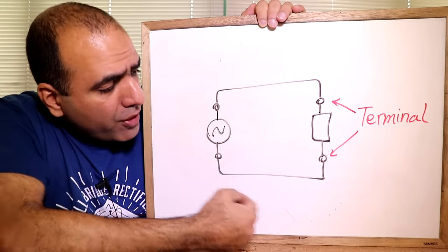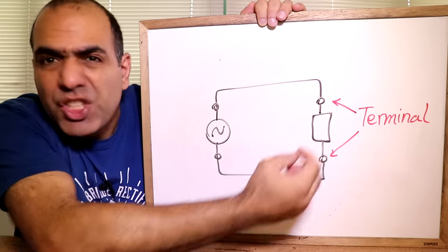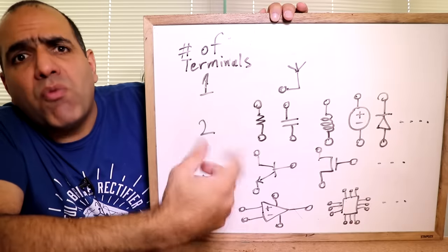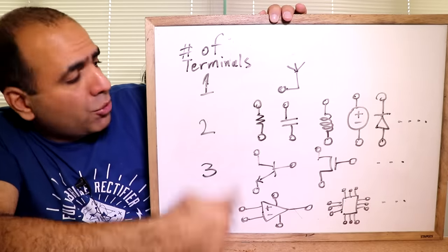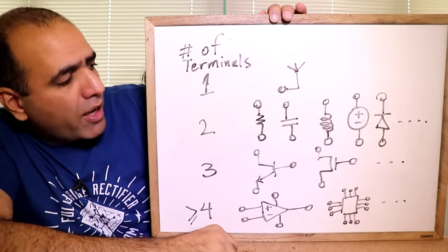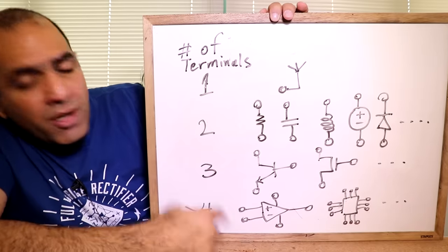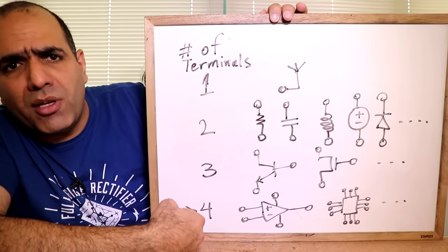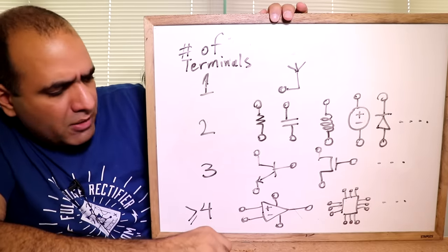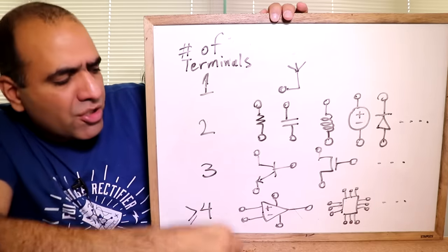Components connect together through these connecting lines by their terminals. Components can have one terminal like an antenna, two terminals is the most common one like resistors, capacitors, inductors, supplies, diodes and such. Three terminals is like transistors. Four terminals and above are like ICs like amplifiers, processors and such.